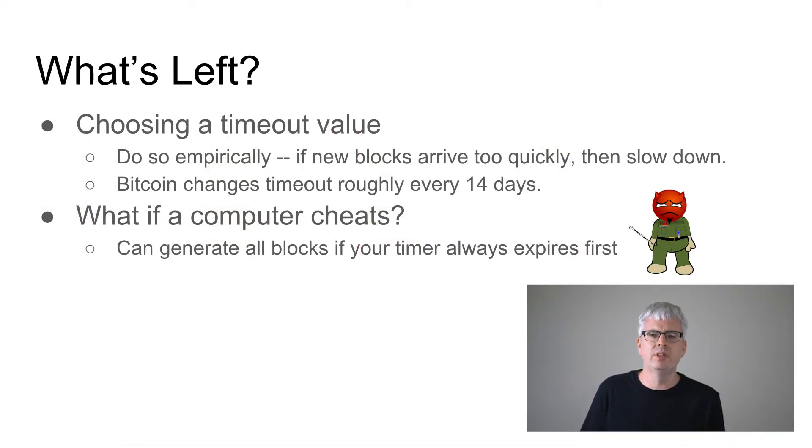So what's left? What haven't we considered yet? Do we have a perfect algorithm yet? No. One thing we haven't talked about is how do you actually pick this timeout value? And the way that Bitcoin does this is it does it empirically. It just says on each node, it measures how often new blocks are arriving. And if new blocks arrive too often, where in Bitcoin world that is more often than one block every 10 minutes, then it tries to slow the system down. And so the way that Bitcoin does this is once every roughly 14 days, it says, okay, are the blocks arriving too quickly? If so, I need to increase my timeouts and make the timers longer. And the whole system will do that at the same time because they're all running the same calculation.